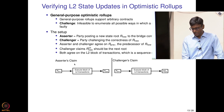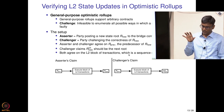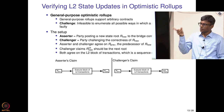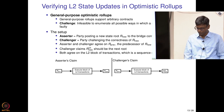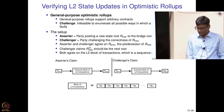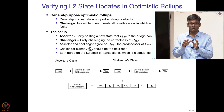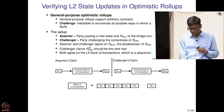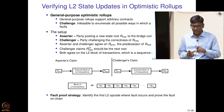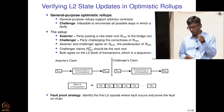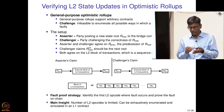The block of transactions is fixed since L2 blocks are posted as call data, consisting of a sequence of opcodes op1, op2, ... up to n opcodes. The fault proof strategy is to identify the first layer 2 opcode where the fault occurs and prove that fault on chain. The key insight is that the number of opcodes is limited — perhaps 256 — so they can be exhaustively enumerated to find the first opcode where the challenger and assertor disagree.